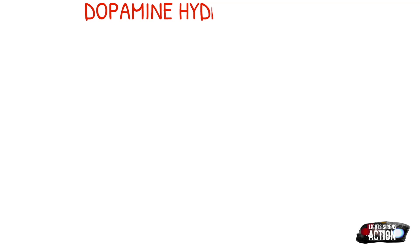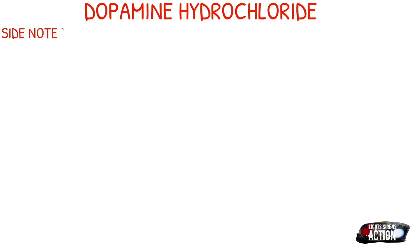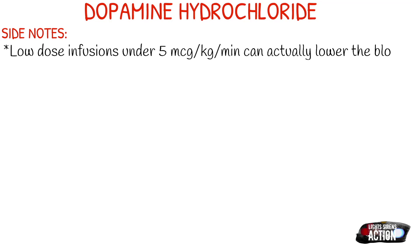A few side notes about dopamine: low dose infusions — meaning under 5 micrograms per kilogram per minute — can actually lower the blood pressure, making them essentially ineffective and even dangerous. At 2 to 4 micrograms per kilogram per minute, dopamine specifically dilates the vessels in the kidneys. At 5 to 10 micrograms per minute, it creates positive chronotropic and inotropic effects. From 10 to 20, you're going to see primary alpha stimulation and vasoconstriction. Each range definitely affects the body in a different way.